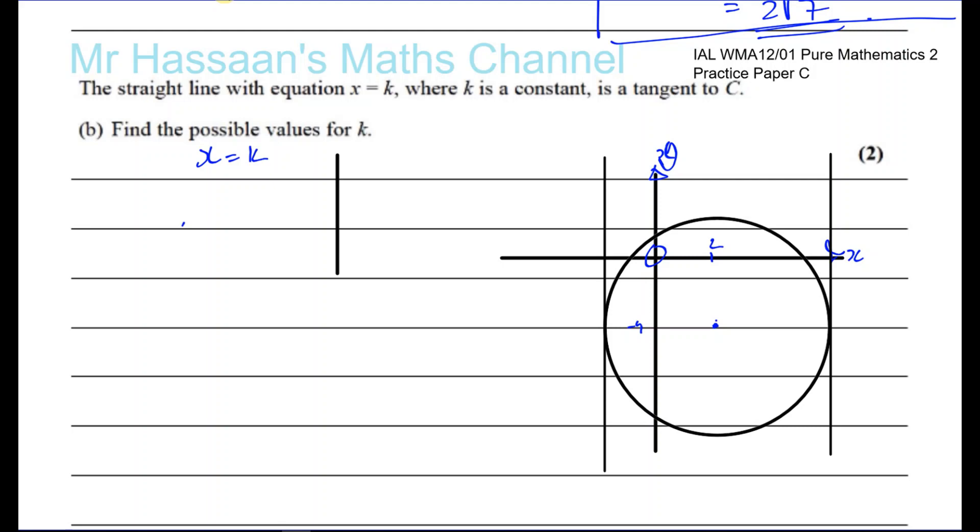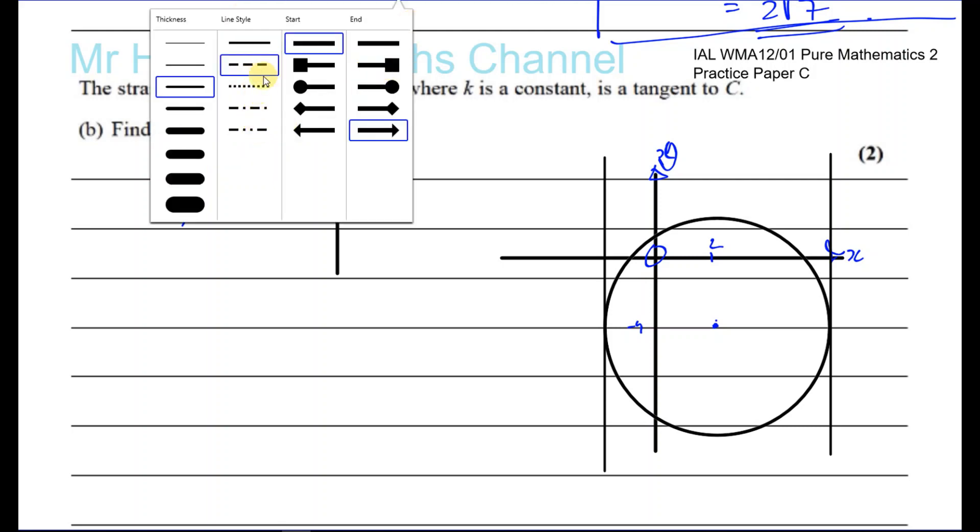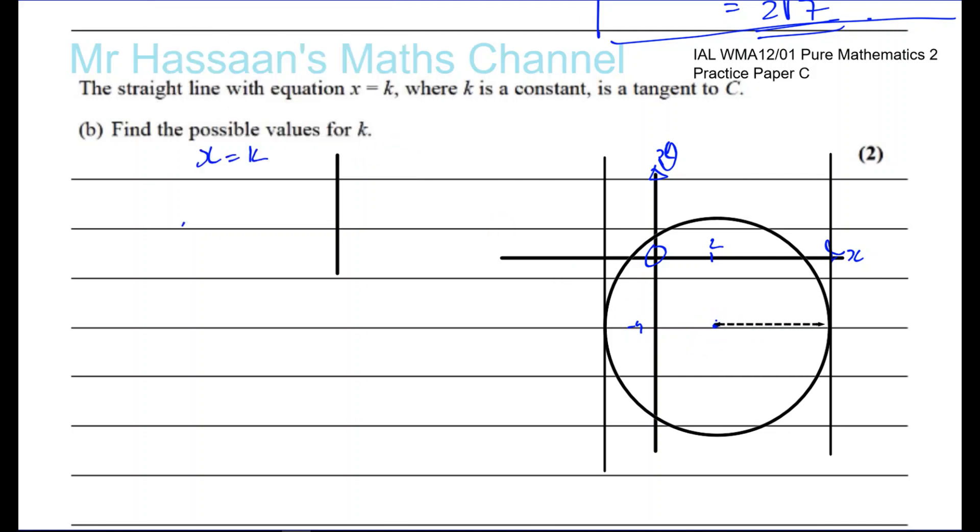We know that the distance between the center of the circle and the circle at this point is the radius of the circle, and the distance between the center of the circle at that point is the radius of the circle. So it's very easy for us to find the value of k. This is one possible value of k, and this is another possible value of k.